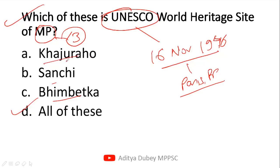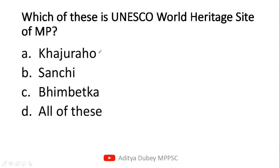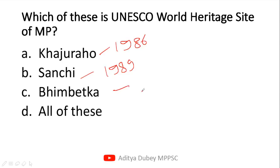If asked when Khajuraho, Sanchi, or Bhimbetka were added to UNESCO's World Heritage Sites: Khajuraho was added in 1986, Sanchi was added in 1989, and Bhimbetka was added in 2003. So the answer to this question is All of these.